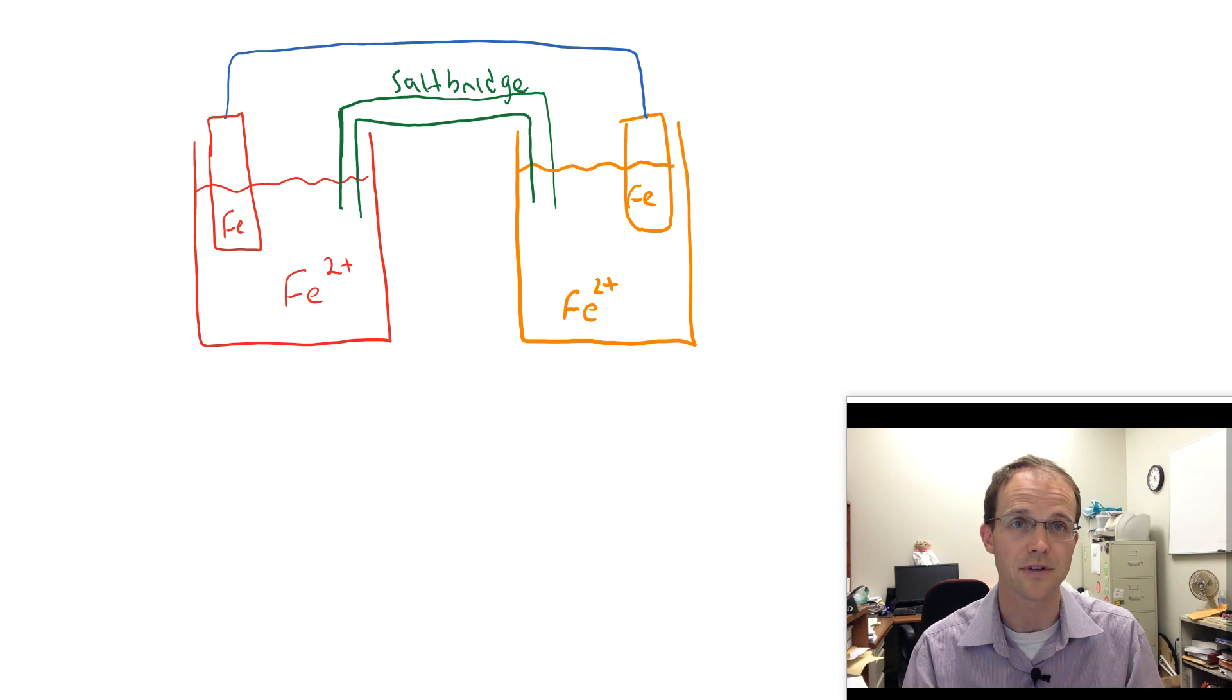Now, if this were a voltaic cell or galvanic cell, we'd expect electrons to start transferring from one side to the other. But when you look here, we've got the same thing on the left as we do on the right. So there's really nothing driving these electrons one way or the other. They don't really want to go to the left solution or to the right solution because it's the same on either side.